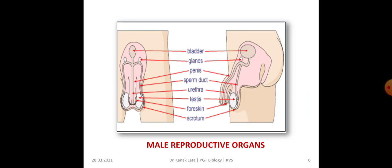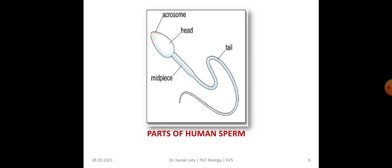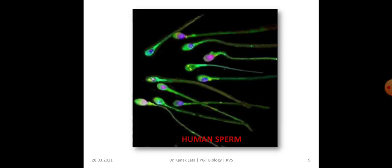This figure shows the male reproductive organs — here is the front view of male reproductive organs. This is about the parts of the human sperm; you can locate the head, middle piece, and tail.